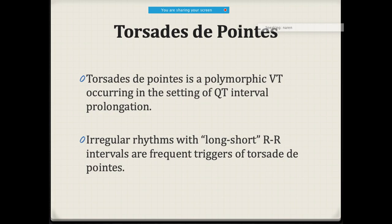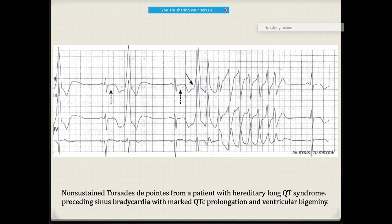Torsades de pointes is a polymorphic VT occurring in the setting of QT prolongation, characterized by long-short RR intervals. On ECG, you notice a slightly prolonged QT, then it takes the form of a twisting pattern — this is the characteristic appearance of torsades de pointes. VPBs can trigger it, and after two VPBs, the patient can deteriorate.